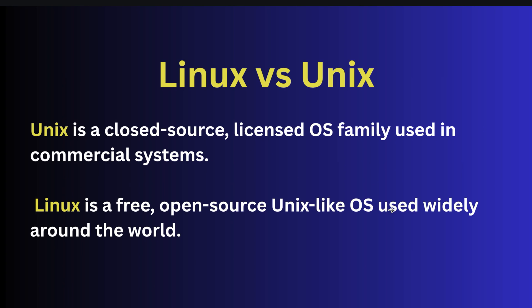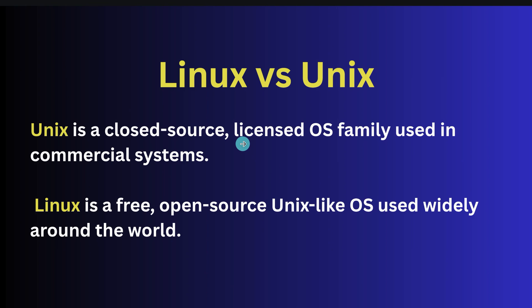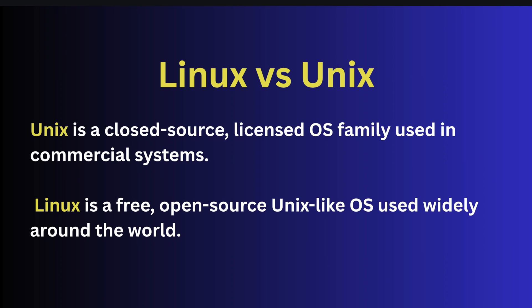Let's quickly understand the basic difference between Linux and Unix. Unix is a closed source, licensed OS family used in commercial systems — it is paid and closed source, meaning you can't use or modify the Unix code. However, Linux is a free, open source Unix-like operating system used widely around the world. We call Linux 'Unix-like' because it is not using the Unix code exactly, but only follows the design principles and philosophy of Unix. You can also modify and use the Linux code because it is free and open source.